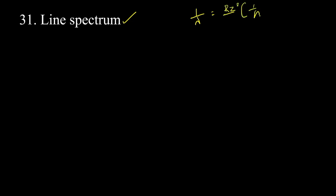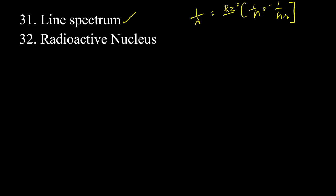Lyman series, Balmer series, Brackett series, Paschen series — all are very, very important. Radioactive nuclear decay: lambda is equal to 0.693 divided by T-half. These are super important and shocking facts.